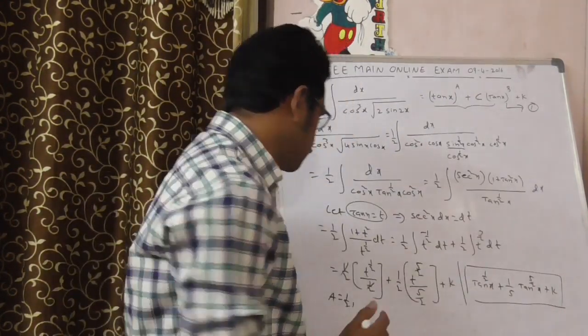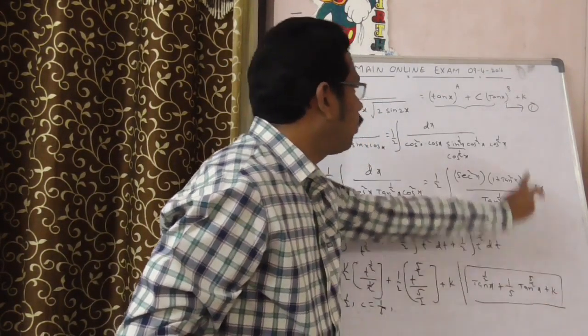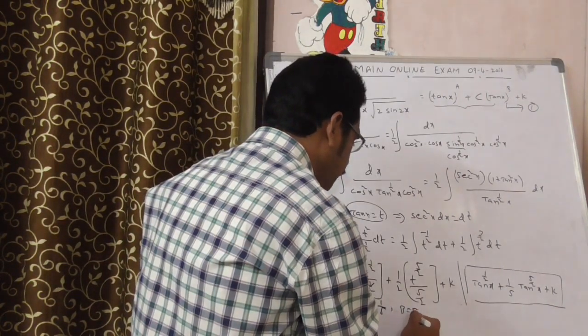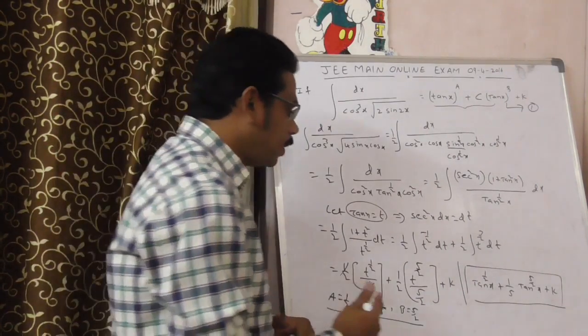Now, C. What is C constant? 1 by 5, C is equal to 1 by 5. Now, tan power 5 by 2, what is there? B. B is equal to 5 by 2. A is equal to 1 by 2, C is equal to 1 by 5, B is equal to 5 by 2.